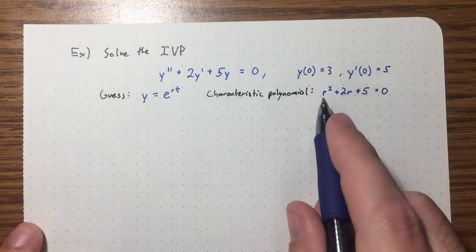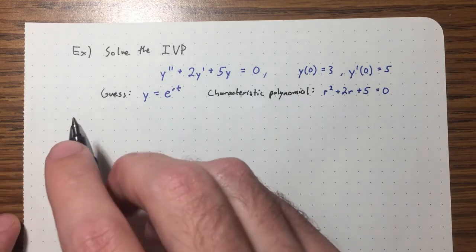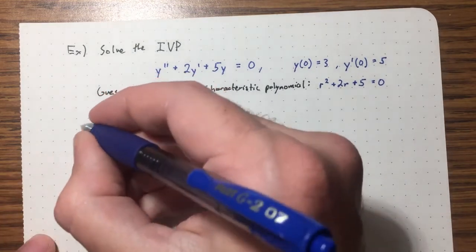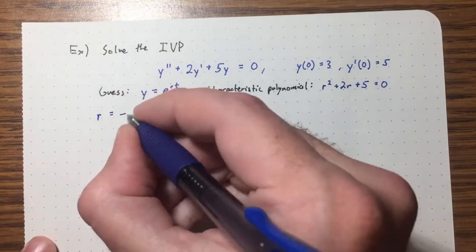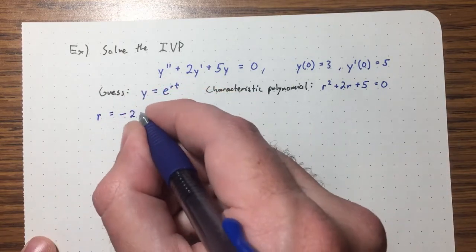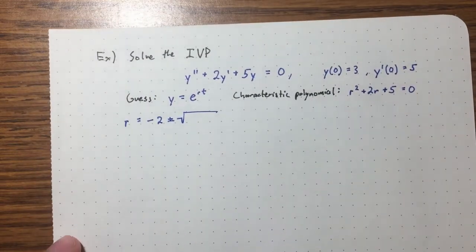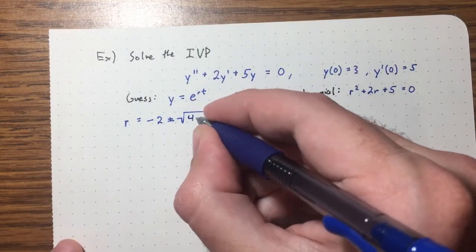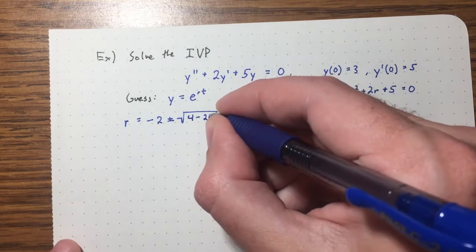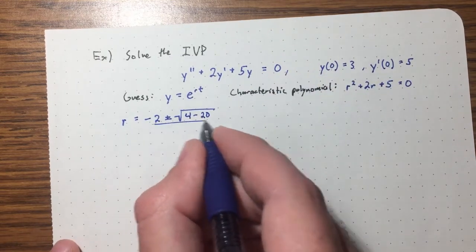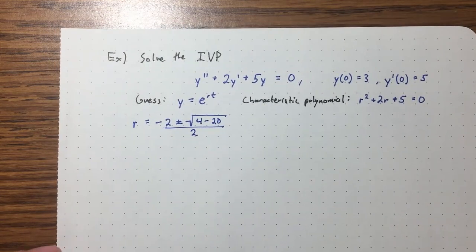It's not obvious that we can factor, so let's use the quadratic formula. The roots are r = [−2 ± √(4 − 20)] / 2 = [−2 ± √(−16)] / 2. Inside the square root we get −16. The square root of 16 is 4, so √(−16) = 4i. Distributing the 2, we get the roots r = −1 ± 2i.